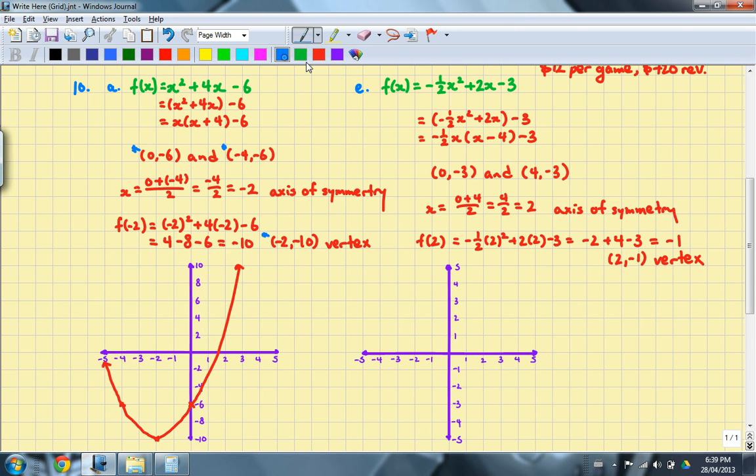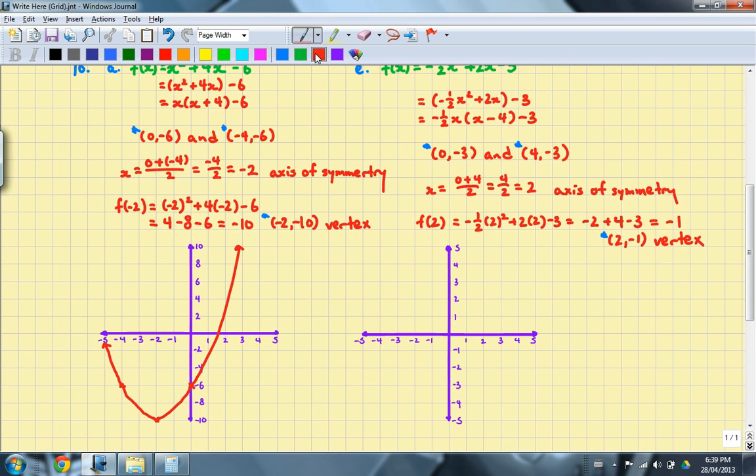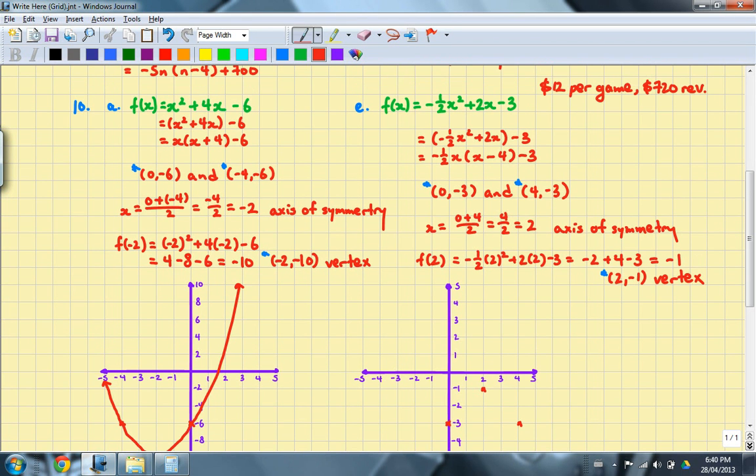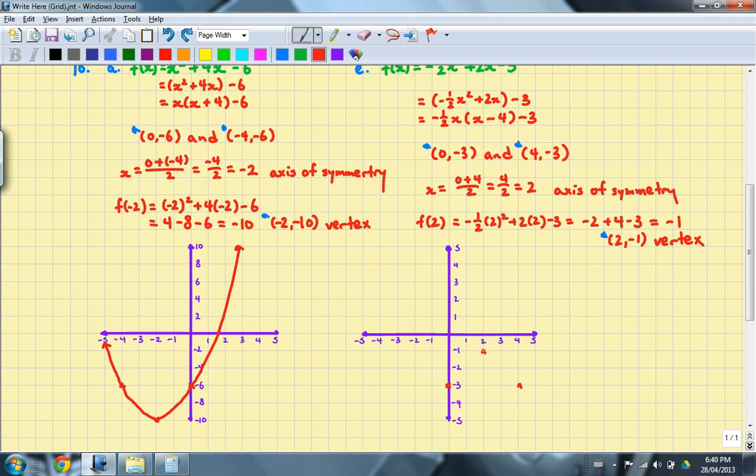And again, I'm going to plot these three points. Point number 1, point number 2, point number 3. On this graph here, so (0, -3), (4, -3), and finally (2, -1). So we do get a parabola that's pointing upside down. And that's good because I have a negative coefficient there. So it's supposed to be pointing down. And again, I draw the best sketch I possibly could. That would be the end of the question.